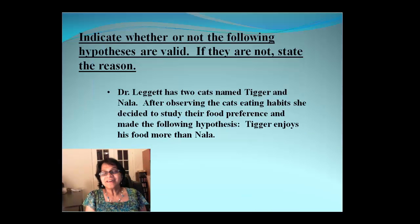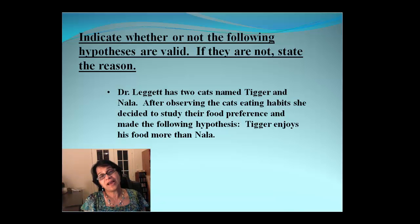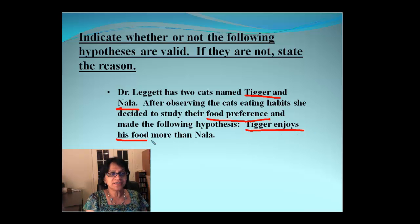Let's take some examples and figure out if these hypotheses are valid or not. Here's the first example. And this example here, there are two cats, Tigger and Nala. And then there's a hypothesis made based upon the observation with the food preference, which food they like to eat. So, the hypothesis is Tigger enjoys his food more than Nala.